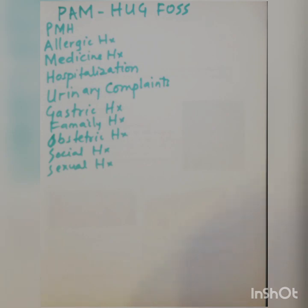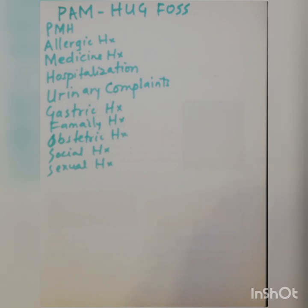P stands for past medical history, A for allergic history, M for medication history, H for any hospitalization, U for urinary complaints, G for gastric history, F for family history, O for obstetric history in females, S for social history, and S for sexual history.